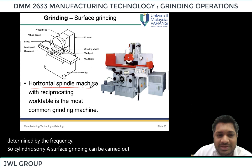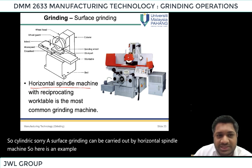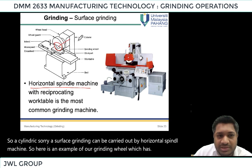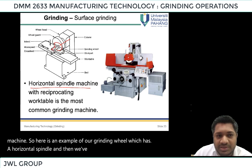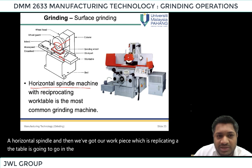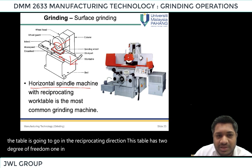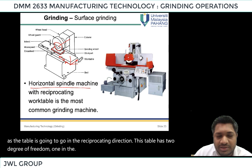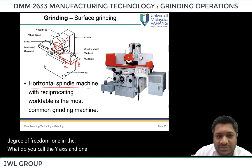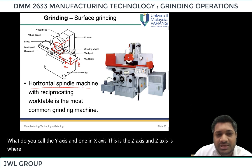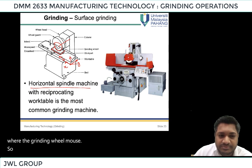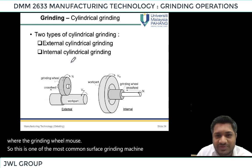Surface grinding can be carried out by a horizontal spindle machine. Here is an example of a grinding wheel with a horizontal spindle, and we have the work piece reciprocating as the table moves. This table has two degrees of freedom: one in the y-axis and one in the x-axis. The z-axis is where the grinding wheel moves. This is one of the most common surface grinding machines available.